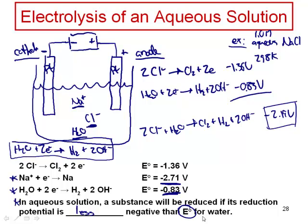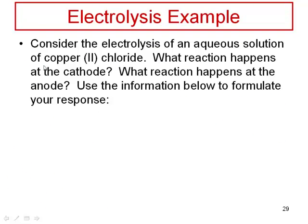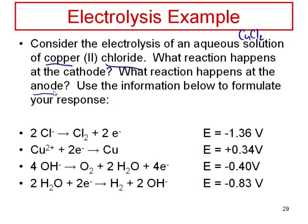Generally speaking in aqueous solution, a substance will be reduced if its reduction potential is less negative than the standard reduction potential for water — basically a substance is only going to be reduced in aqueous solution if it's easier to reduce than water. If water is easier to reduce, then water will be reduced. We'll look at another example where this is a possibility. Let's look at another electrolysis example — here's one where we're going to electrolyze a solution of copper chloride, CuCl₂. Consider the electrolysis of an aqueous solution of copper chloride. What reaction happens at the cathode? What reaction happens at the anode? This shows up on the AP exam all the time. This is a neutral, or approximately so, neutral solution of copper chloride.